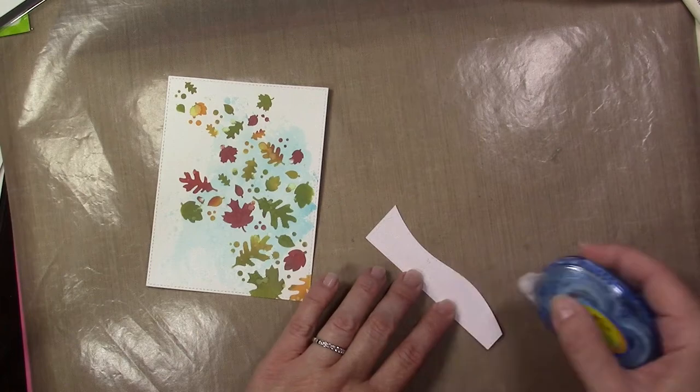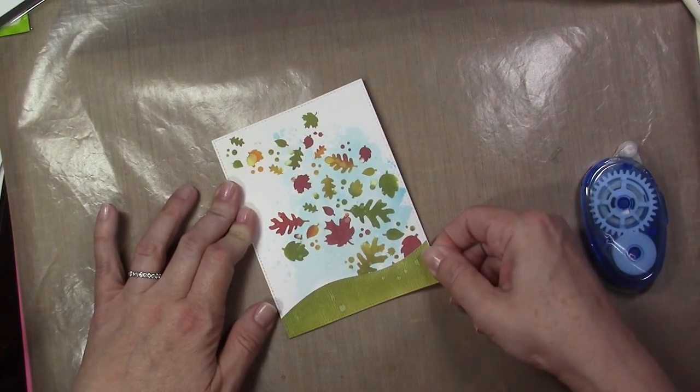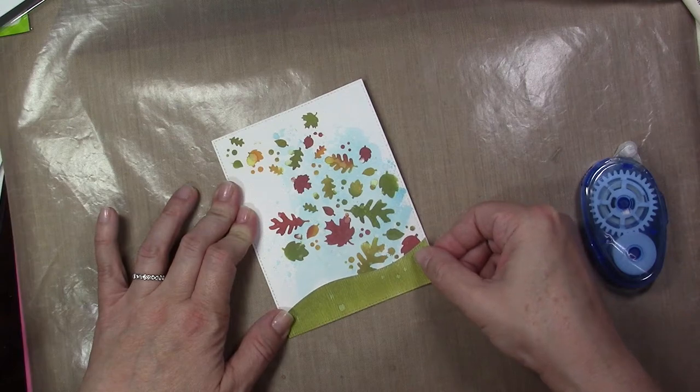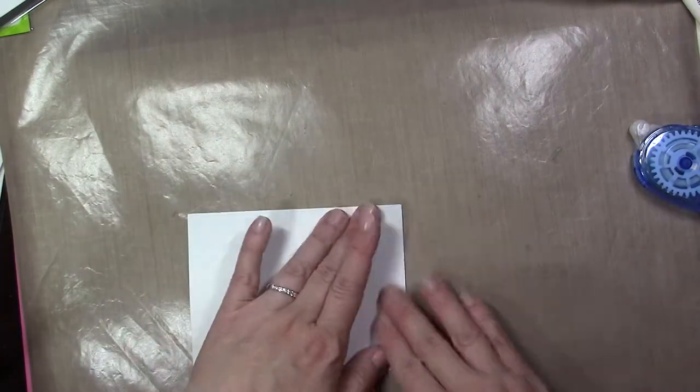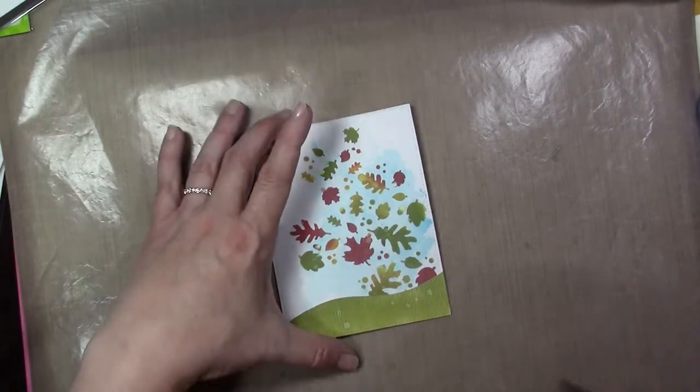So now that I have both the pieces trimmed and die cut I'm going to go ahead and add some adhesive to the back of the grass area and I'm just going to add that down and then I've got a I'm going to go ahead and stamp the sentiment onto it.